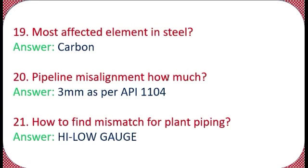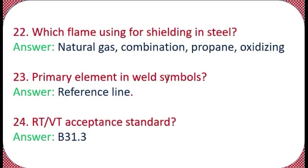Question 21: How do you find mismatch for plant piping? The answer is by using a hi-lo gauge. Question 22: Which flames are used for shielding in steel? The answer includes natural gas, combination, propane, and oxidizing — these four flames can be used for shielding in steel.